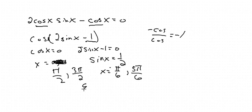If you were doing like the set, the set for the answer would be pi over 2, 3 pi over 2, pi over 6, and 5 pi over 6. That's the whole set.